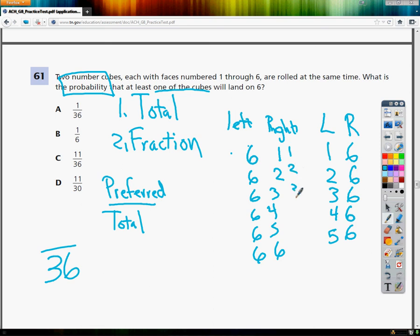So I'm going to count up all these possibilities. I've got 1, 2, 3, 4, 5, 6, 7, 8, 9, 10, 11 possibilities, where one of them at least is 6. So I put that 11 on top. 11 over 36 is my answer. So the answer to number 61 is C.